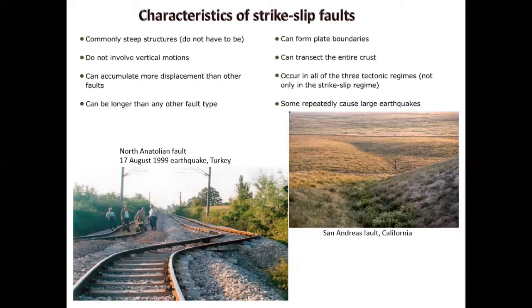These structures sometimes form to accommodate the differential rates on the Earth's crust. These type of structures usually produce really large, great earthquakes, and these earthquakes usually repeat very regularly. Each large-scale strike-slip fault has an earthquake production period. For some faults it can be 50 years — so every 50 years that single fault segment can produce maybe a magnitude 7 earthquake.